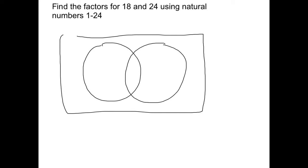Today we're going to find the factors for 18 and 24 using natural numbers 1 through 24. We'll do this by creating a Venn diagram of our factors. First, I'll draw my Venn diagram and a box around it. Since we're using natural numbers 1 through 24, we also need a place for numbers that are not a factor of either, and that's what the square is for.